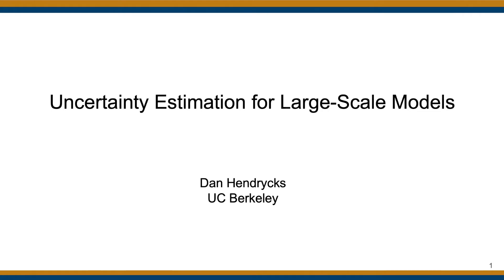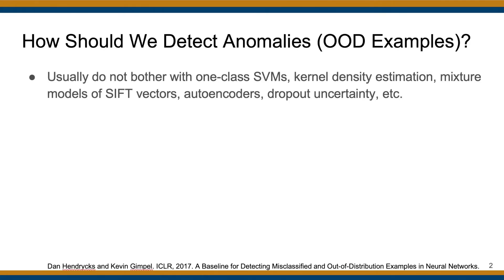I'll focus on data that is naturally occurring and won't focus on data that appears in very closed contexts. A natural question is how do we detect anomalies in the first place? Anomalies, or out-of-distribution examples, are fairly difficult to detect, and there are a lot of techniques that many people think might be effective but usually aren't that efficacious.